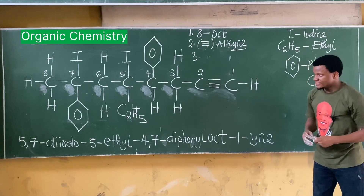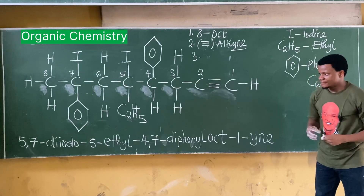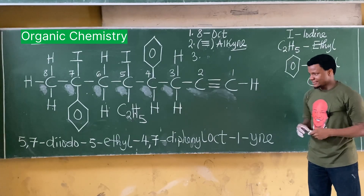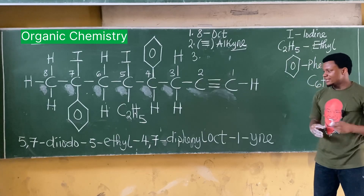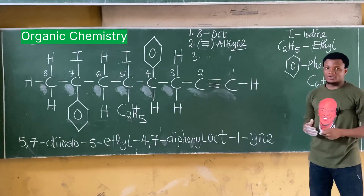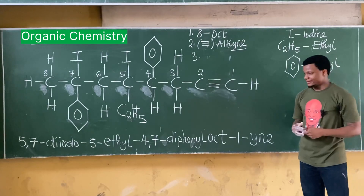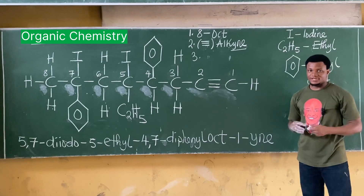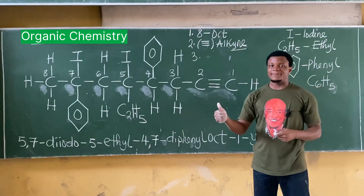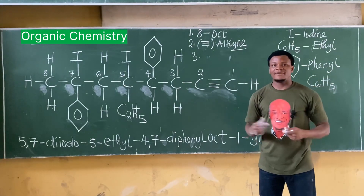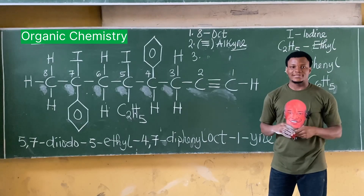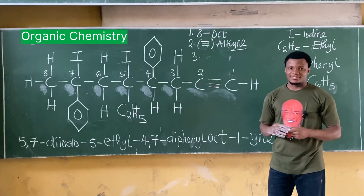The full name of this compound is 5,7-diiodo-5-ethyl-4,7-diphenyl oct-1-yne. That's how we name this compound. If you enjoyed this video, don't forget to hit the like button, leave a comment, and share with your friends. Thank you and see you in the next class.